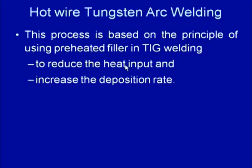Another variant of the tungsten inert gas welding process involves feeding preheated filler metal into the arc zone during welding so that melting can be achieved at a higher rate and the weld can be made at higher speed. This variant is the hot wire tungsten arc welding process. In this process, preheated filler metal is fed into the arc zone during welding.